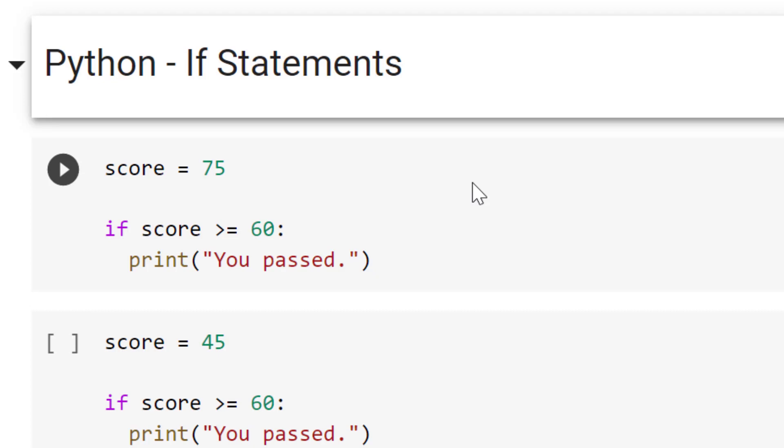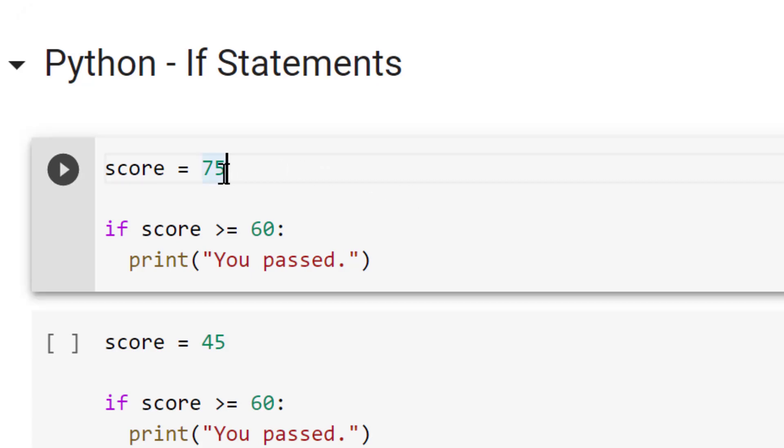So if you want to follow along with this code, a link will be found on the page. So let's look at our first if statement. Okay, so what we're going to say is we're going to set a variable called score equal to 75. And then we're going to say if that score is greater than or equal to 60, we're going to print you passed. Now, what's important to note here, just in terms of syntax,